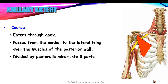The axillary artery is divided by the pectoralis minor muscle into three parts. The first part lies before the pectoralis minor, the second part lies beneath the pectoralis minor, and the third part lies inferior to the pectoralis minor muscle.